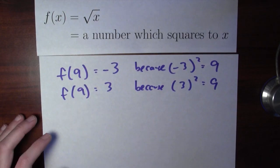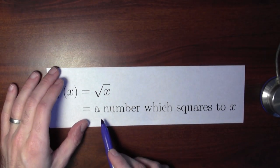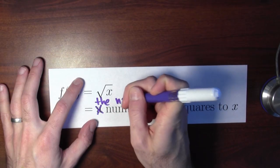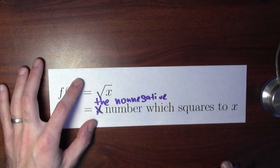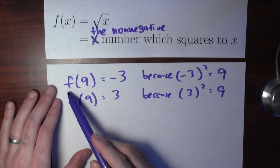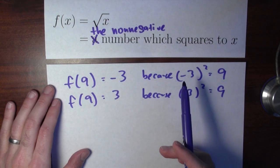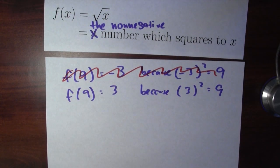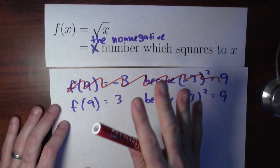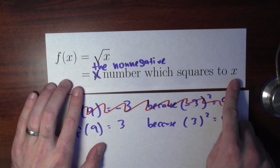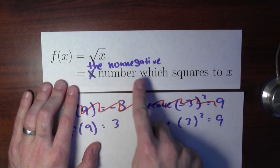This is bad. A function is supposed to be unambiguous — it's supposed to have one output for each input. If you take this as the definition of the square root function, just any number which squares to x, you've introduced some ambiguity. What's the square root of 9? Is it minus 3 or is it positive 3? The solution is to change the definition. Instead of the square root being just any number which squares to x, you're going to take it to be the non-negative number which squares to x. So f of 9 equals 3, because 3 is the non-negative number which squares to 9.